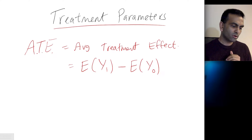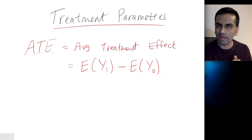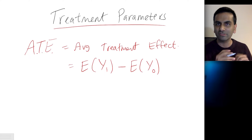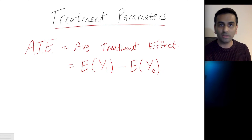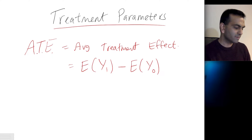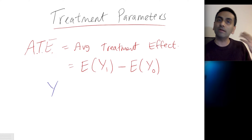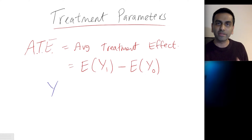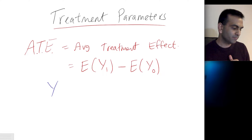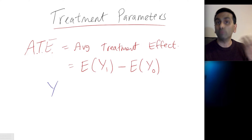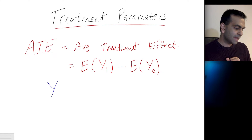So what does this notation mean? What is Y0 and Y1? This is common vocab used across a lot of different textbooks, papers, and videos. Y, in general, is just the outcome variable. So if your outcome variable is income, then Y is income.